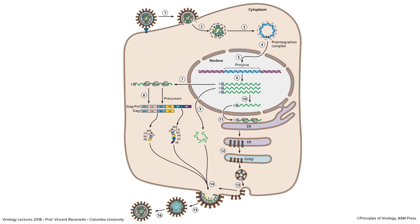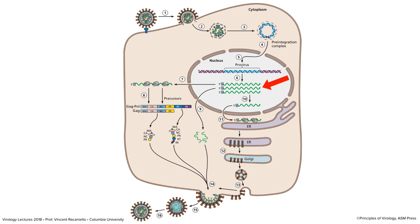Summary of the retrovirus reproductive cycle: the virus binds and fuses at the plasma membrane, the core enters the cytoplasm, reverse transcription occurs making a double-stranded DNA, which enters the nucleus and is integrated by integrase. Transcription of the provirus gives full-length or near-full-length mRNAs encoding structural proteins and enzymes. Some mRNAs are exported unspliced and incorporated into new virus particles. The mRNA is also spliced to give a smaller RNA encoding viral glycoproteins, which are shipped to the plasma membrane and incorporated into new virus particles.